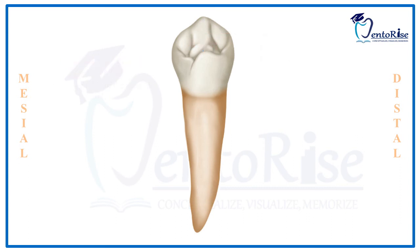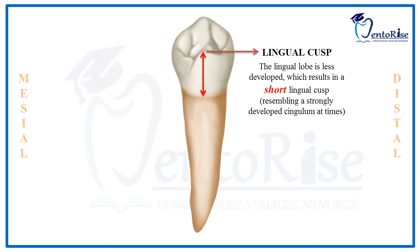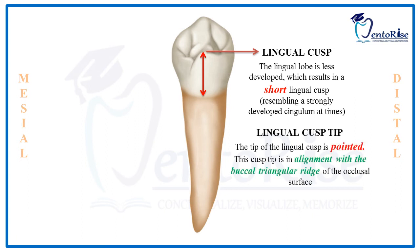Focusing on the lingual cusp, it is shorter in length than the buccal cusp. Sometimes it is so short that it resembles a well-developed cingulum, very similar to that of a permanent mandibular canine. The lingual cusp tip is pointed and is in alignment with the buccal triangular ridge.